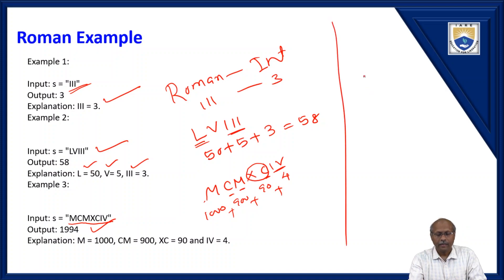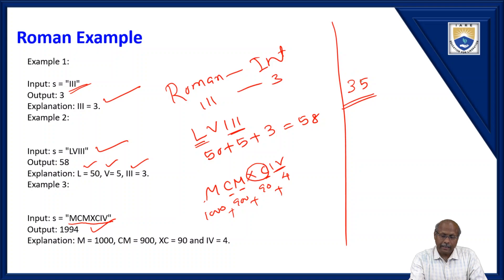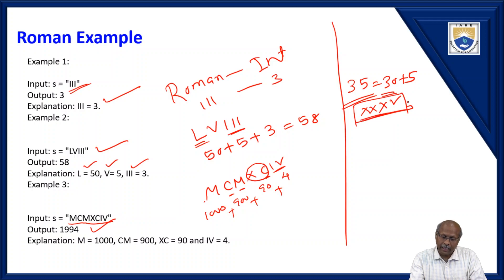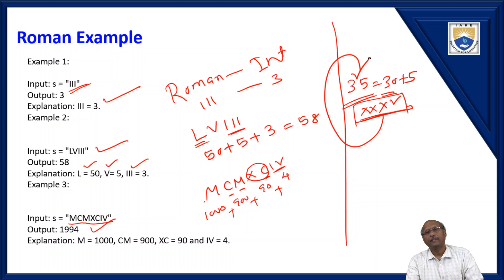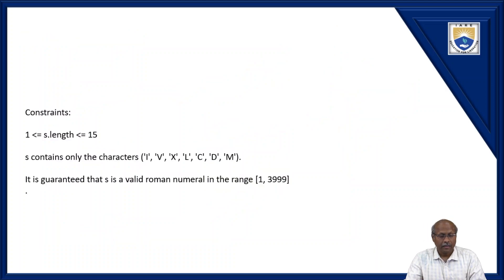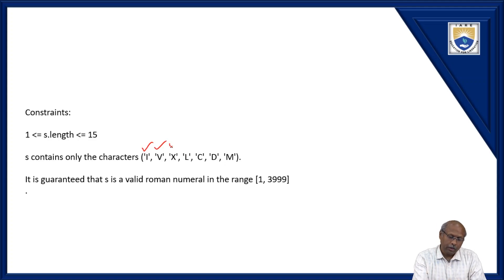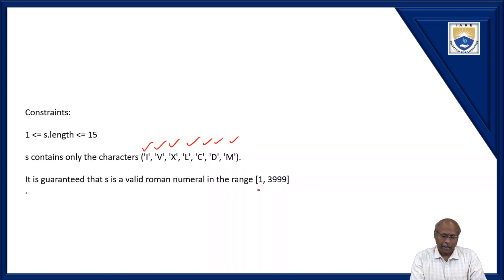For example, if I give 35: 35 is 30 plus 5. 30 is XXX (three X's) and 5 is V. So XXXV gives 35. The valid range is 1 to 3999 because maximum three M's can be used.